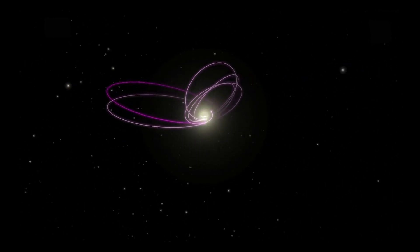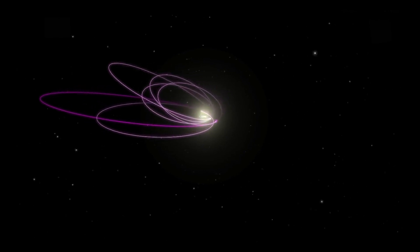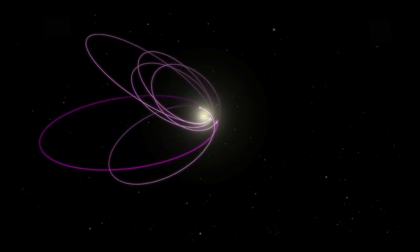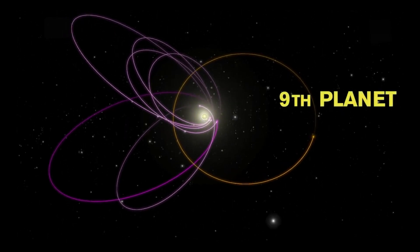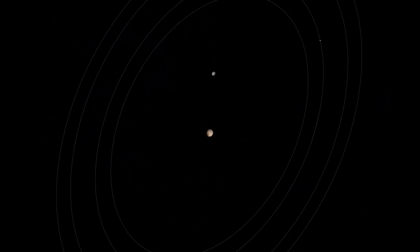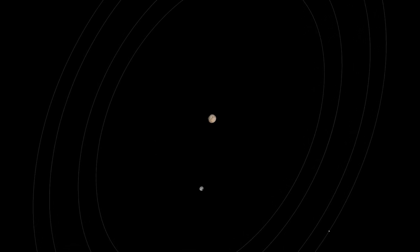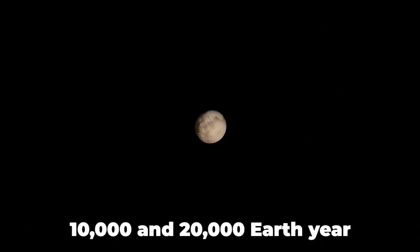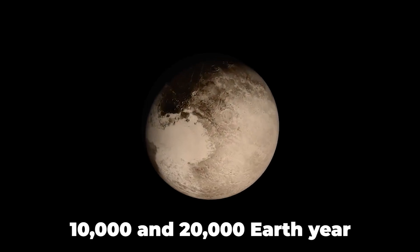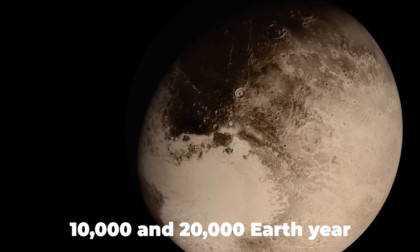The computer simulations that first predicted the existence of Planet 9 also predicted its orbit, which is most likely an extremely long, thin ellipse. It is still far distant from Pluto, even when it is closest to the sun. It would take Planet 9 between 10,000 and 20,000 Earth years to make just one orbit of the sun at a distance of around 56 billion miles.